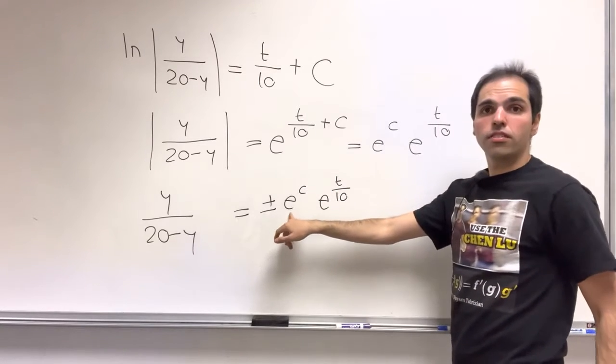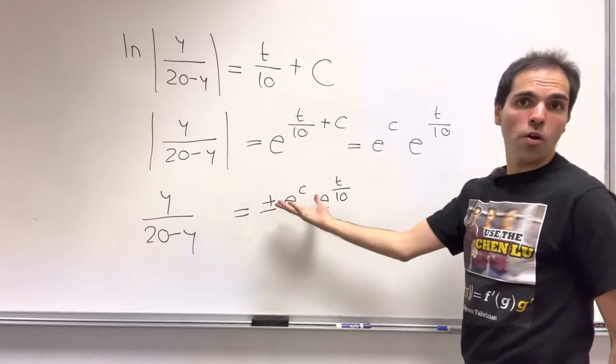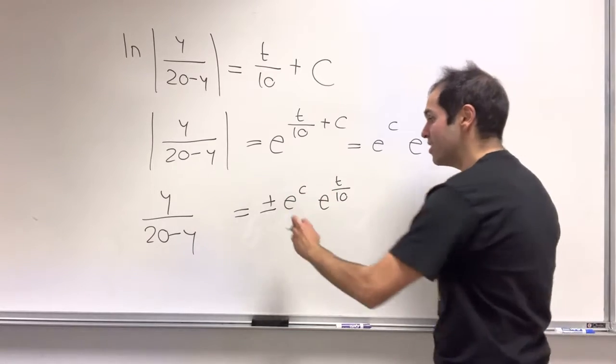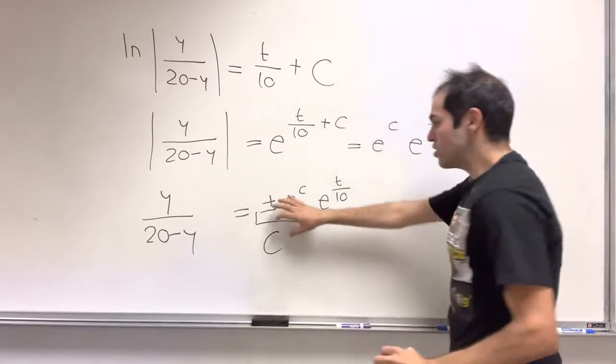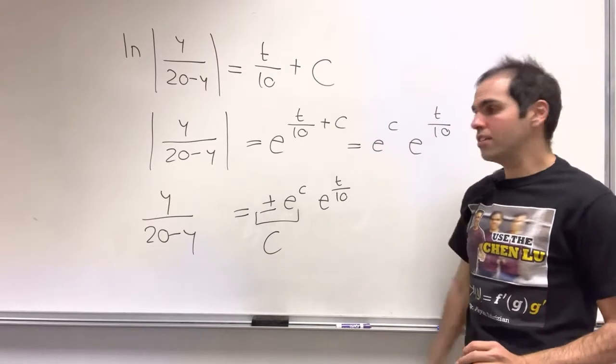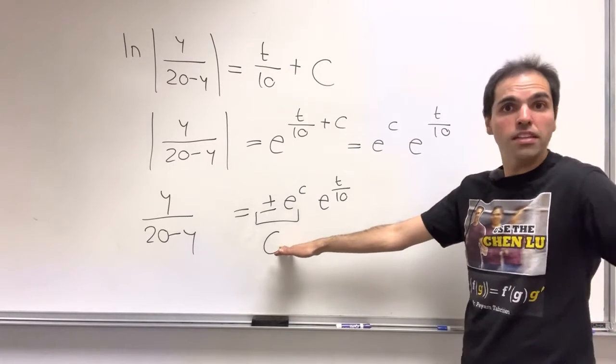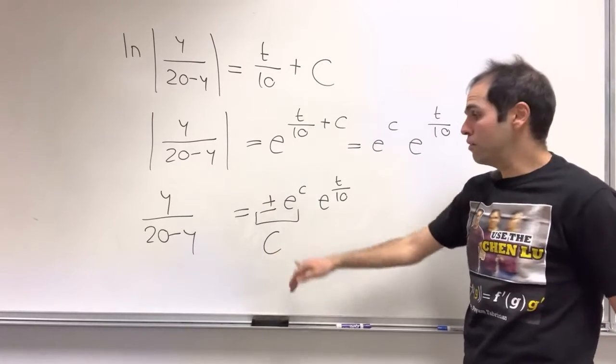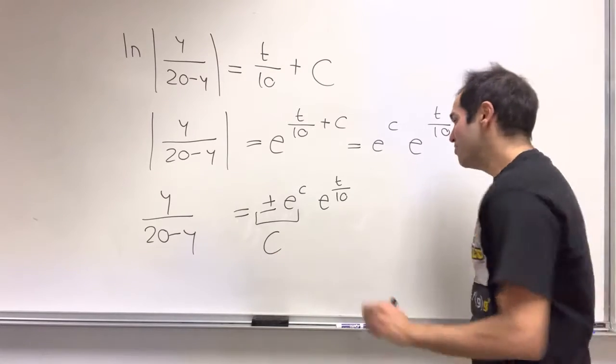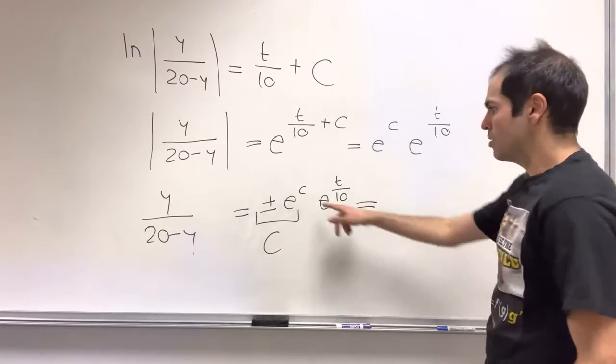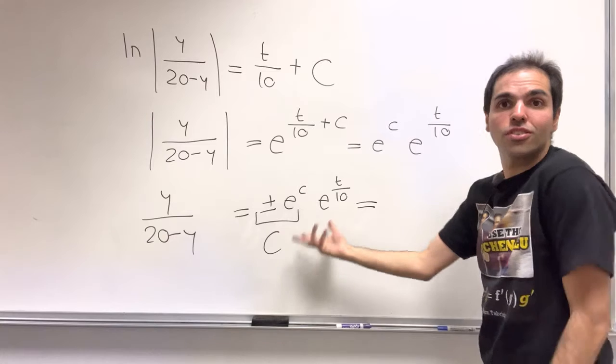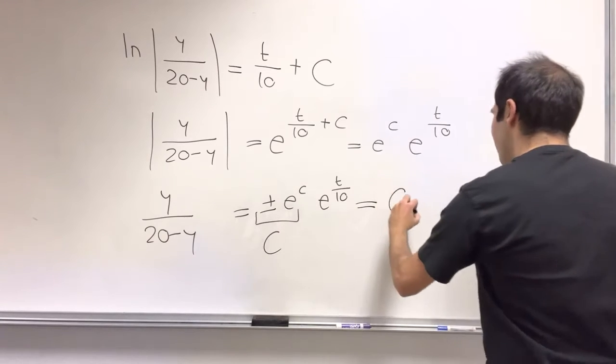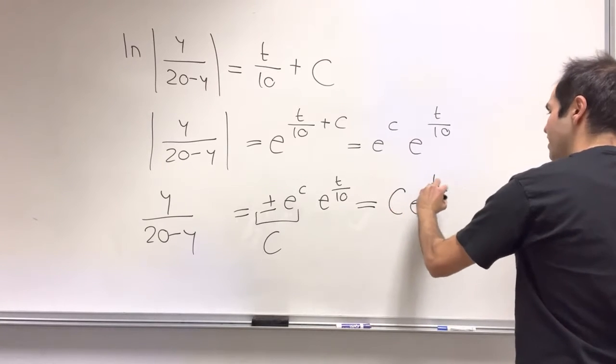But here's the thing. So e to the c is any arbitrary positive constant. And with this plus minus, this just becomes an arbitrary constant. So let's just replace this name by c, because this is arbitrary. So we just call it an arbitrary constant. And we get c e to the t over 10.